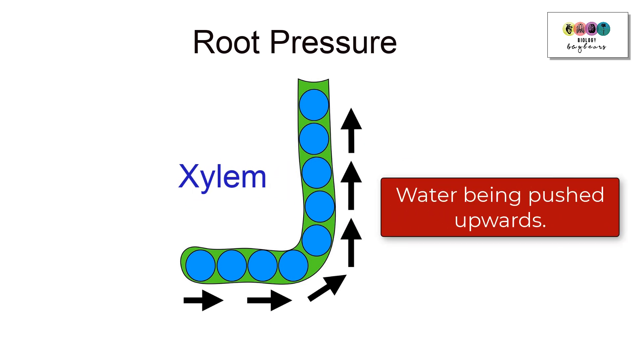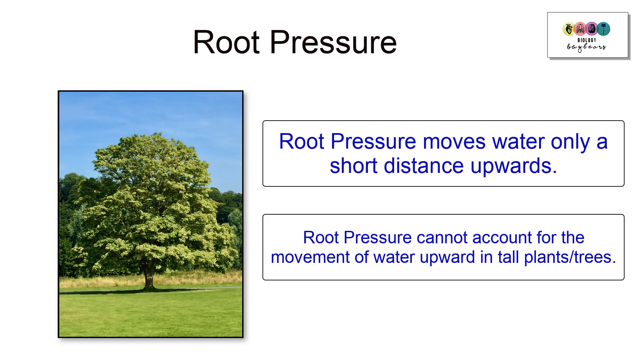Root pressure could only account for the movement of water upwards a short distance. It's not great enough to overcome the force of gravity in tall trees.